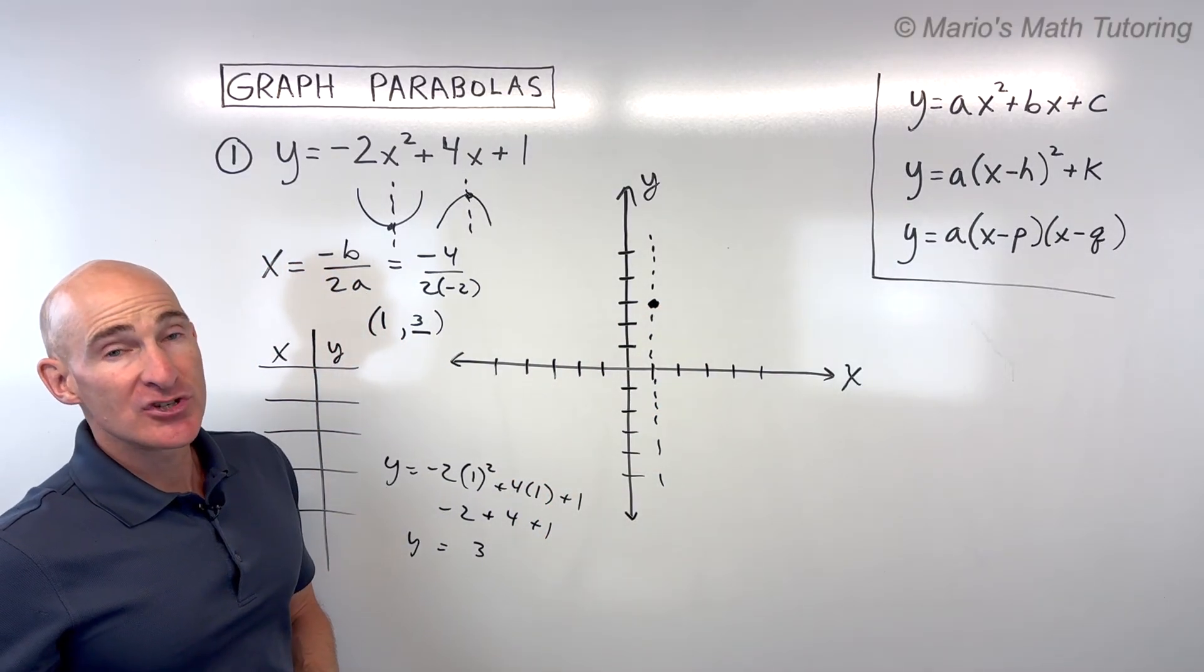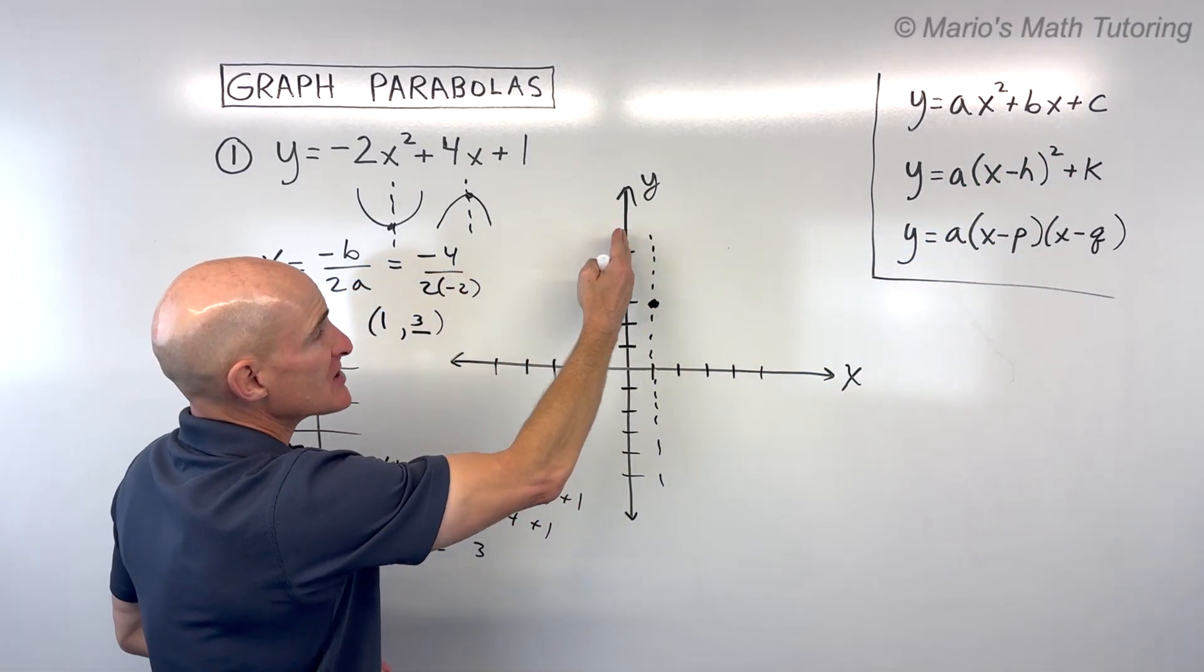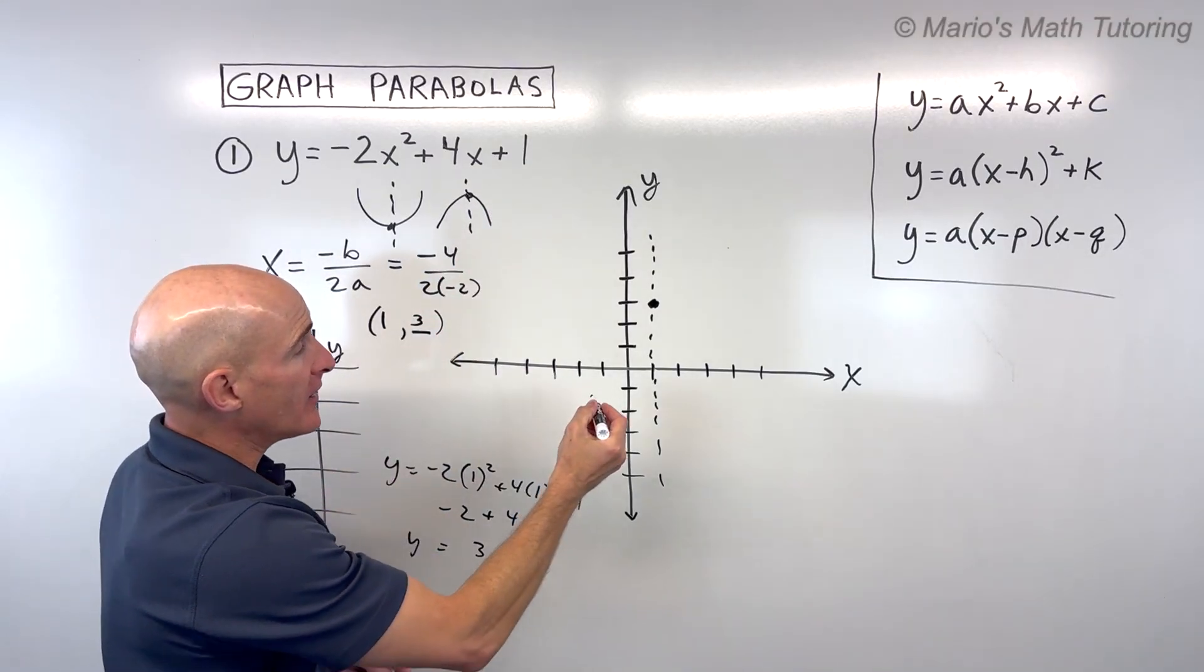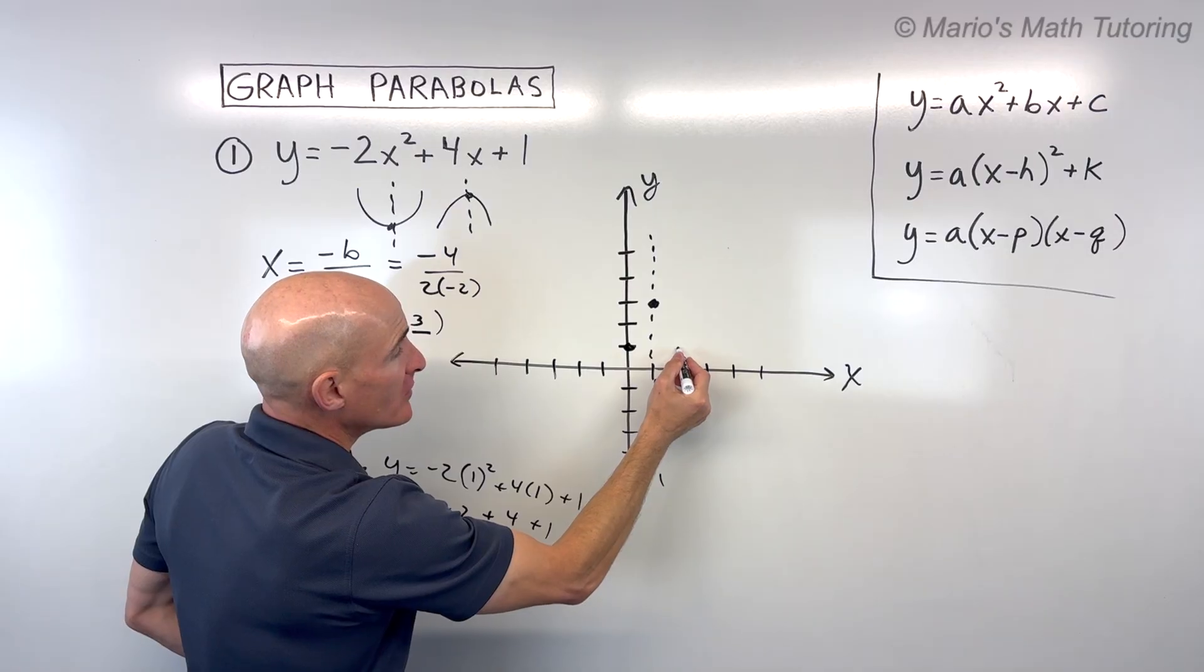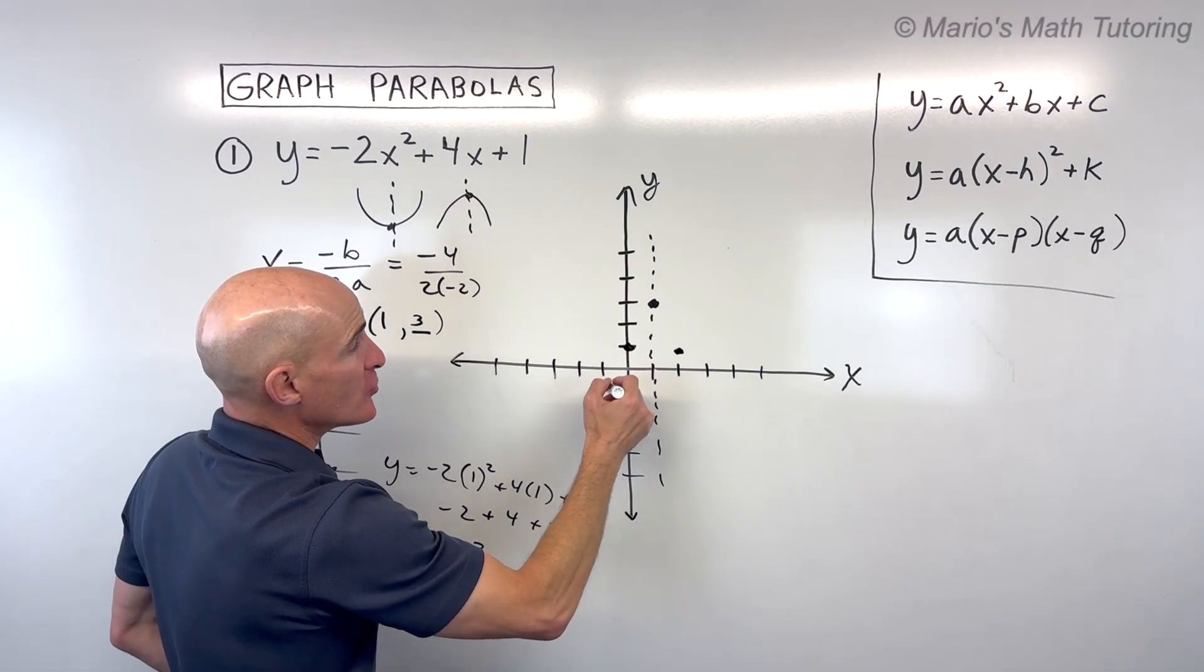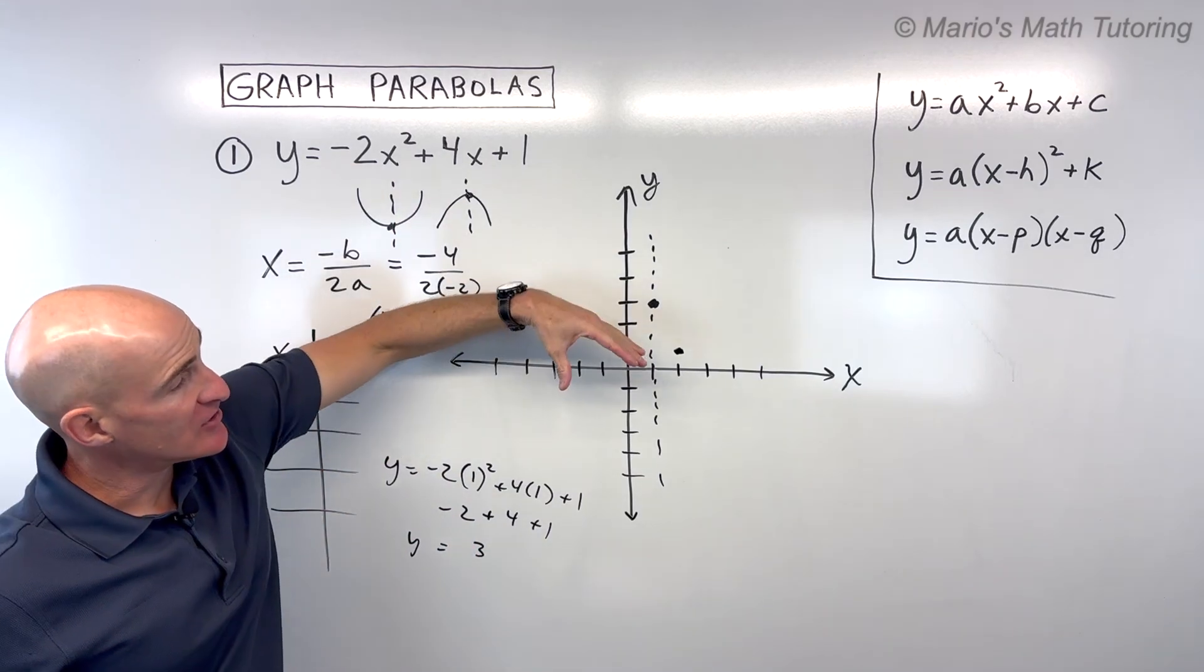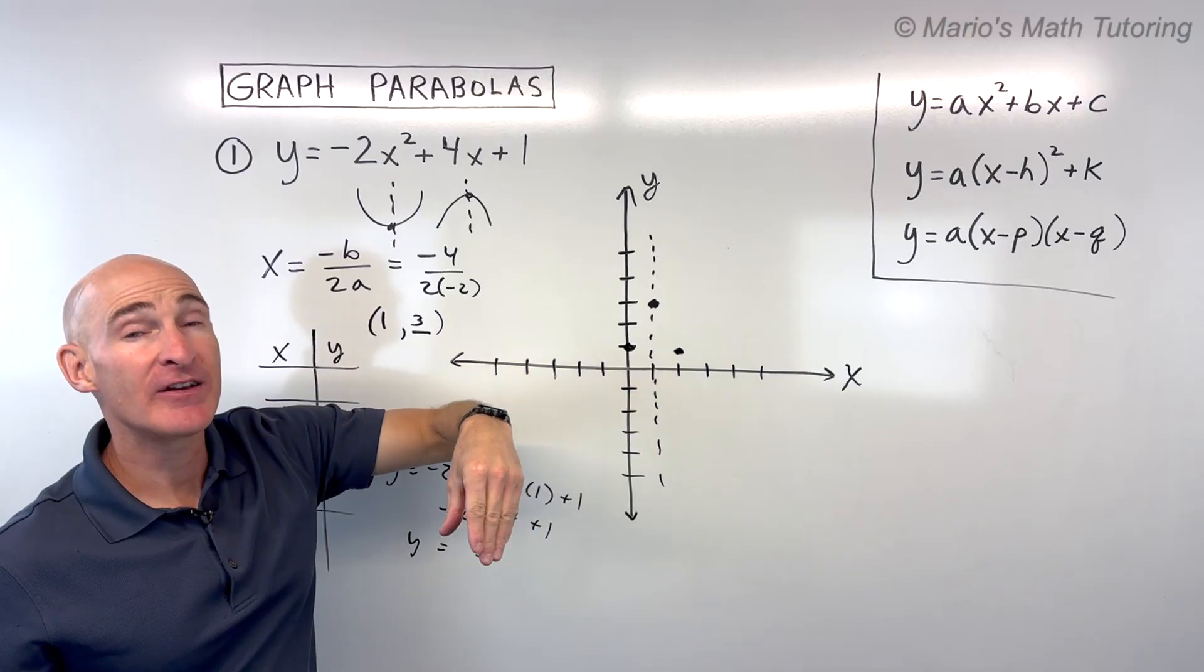Now one quick thing you can do is that this c value is going to give us the y-intercept where it crosses the y-axis. So in this case, c equals 1. That means it's going to cross right here at 1. We can fold it over that axis of symmetry to get another point, and then you can draw your graph. Notice that the a value is negative. That tells us the graph is opening down. The 2 is stretching it, which makes the graph narrower.